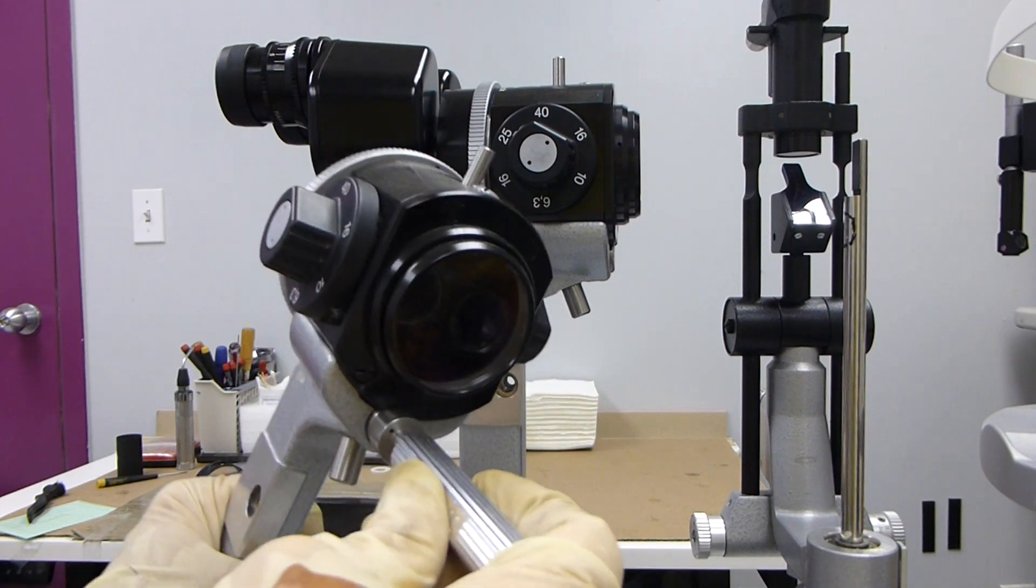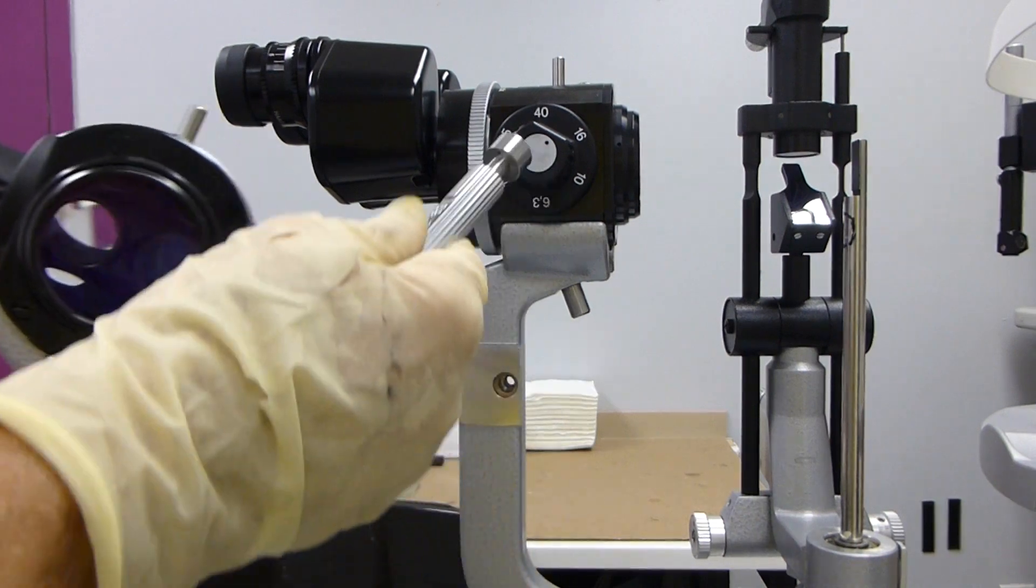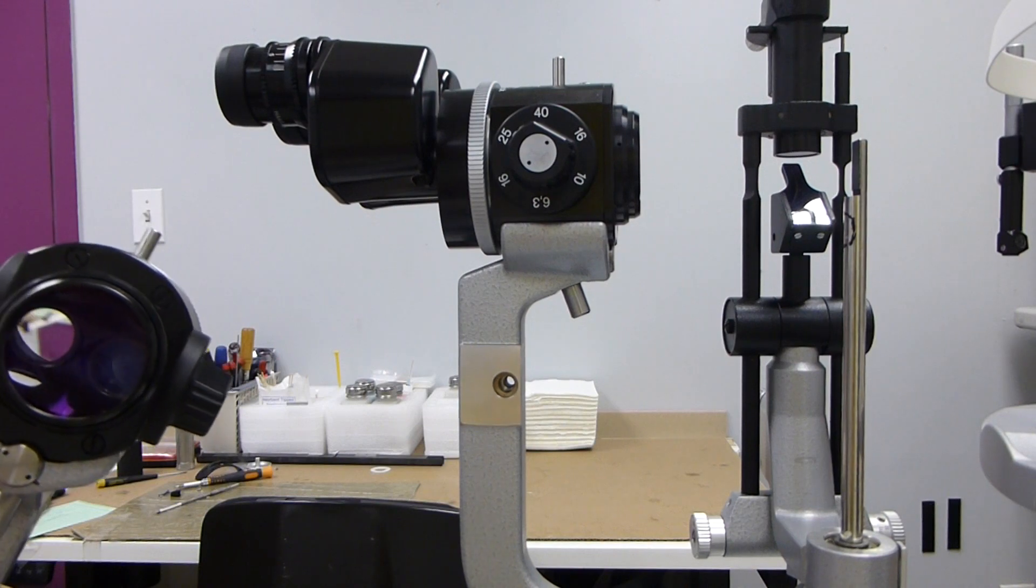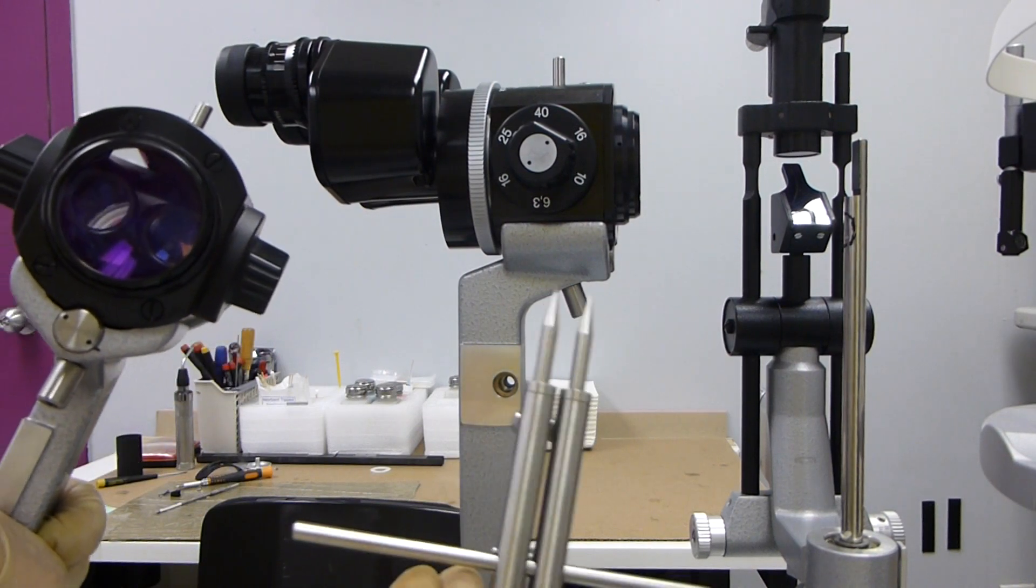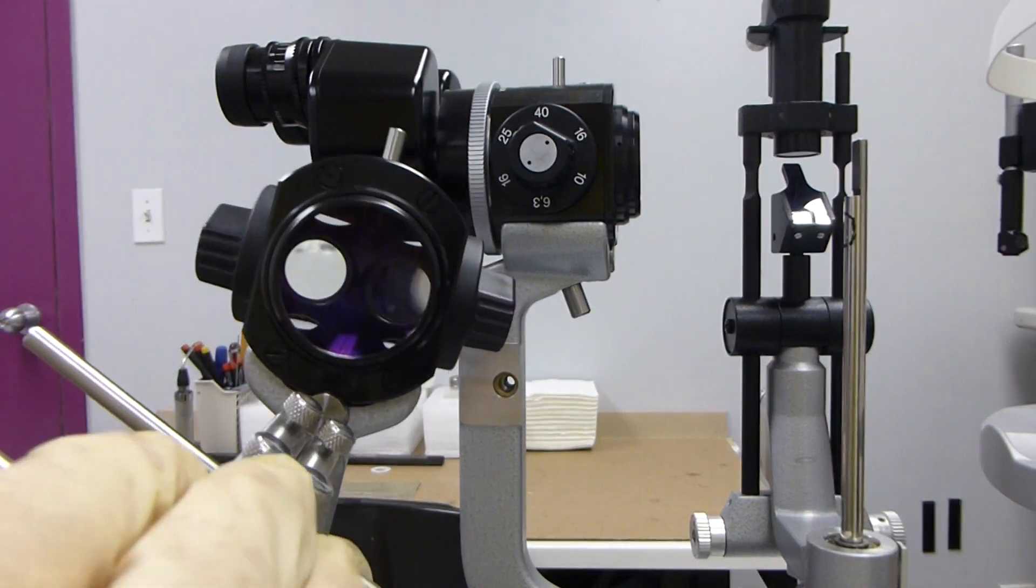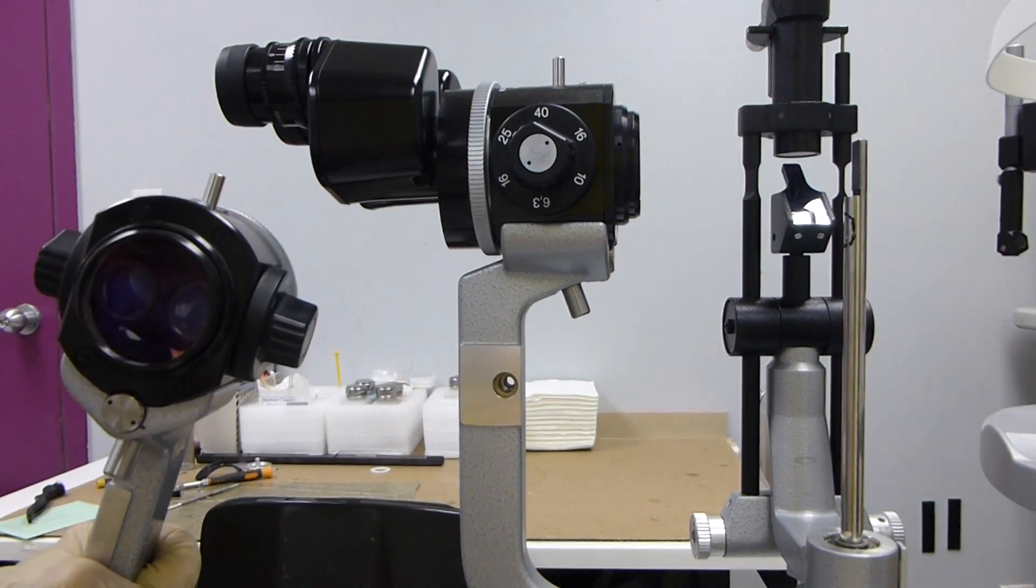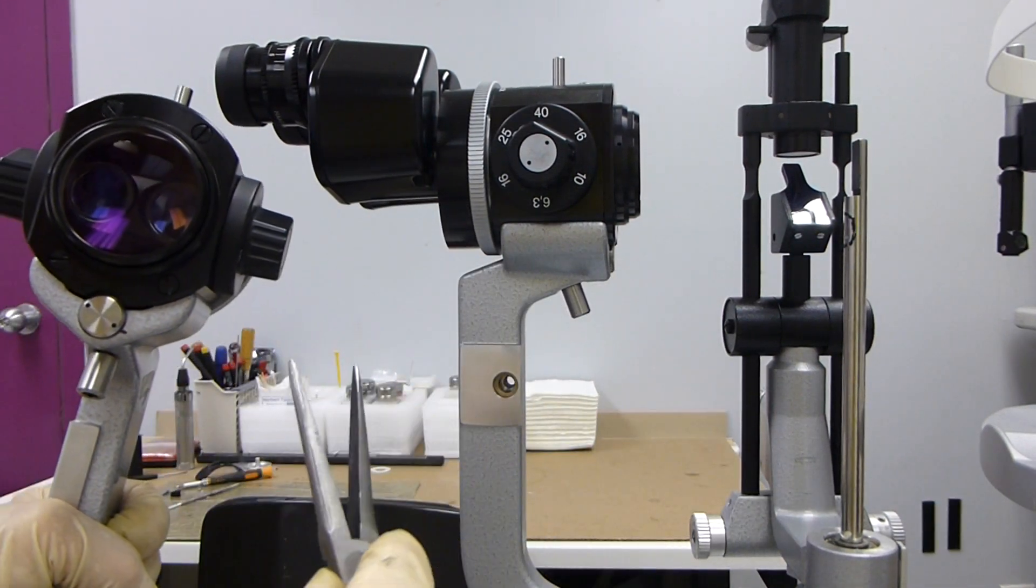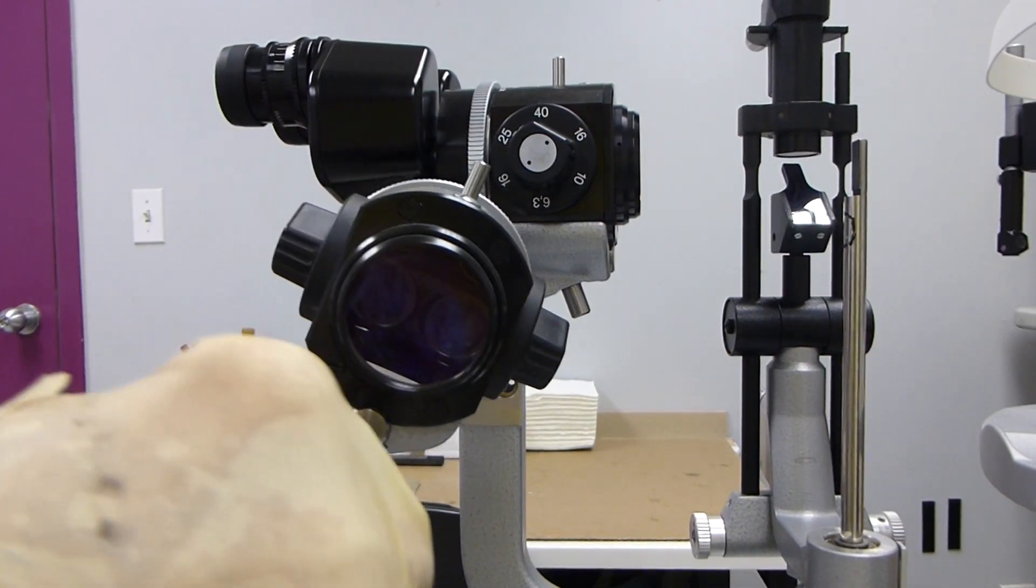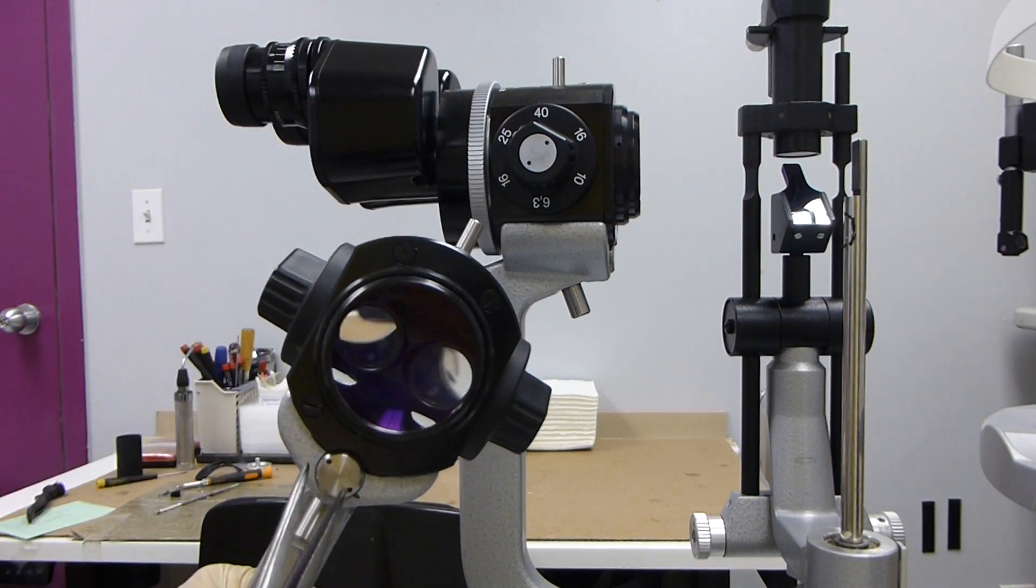You can use a special tool to turn it. It's the same tool that you use on your binocular knob. Or you can get a spanner wrench, put it in there to turn it one way or the other. Or if you have some needle nose that have a sharp point on them, you can put it in that to turn it. Whatever it takes.